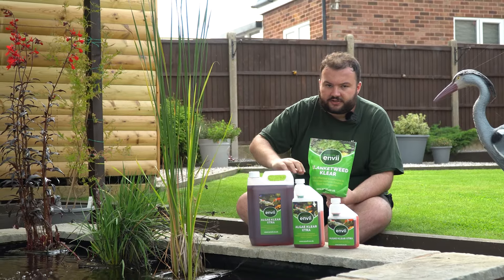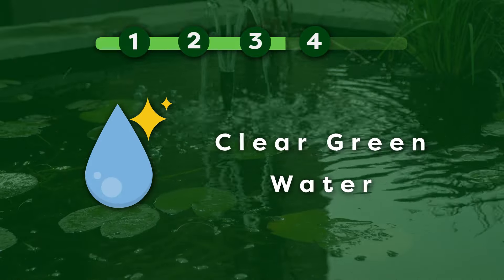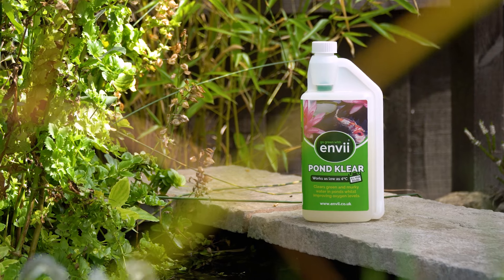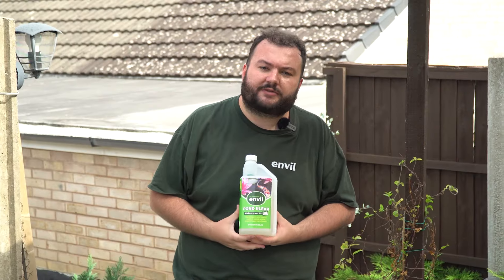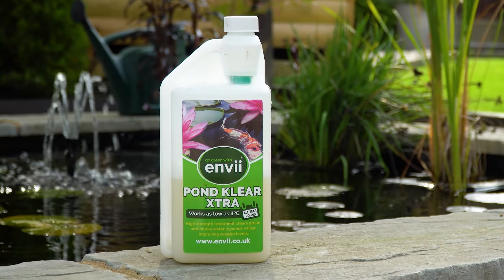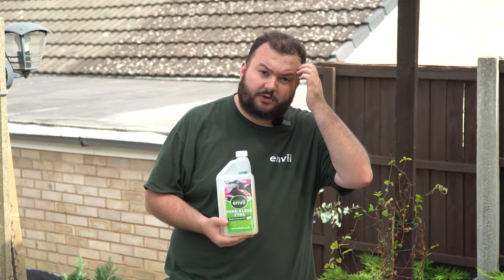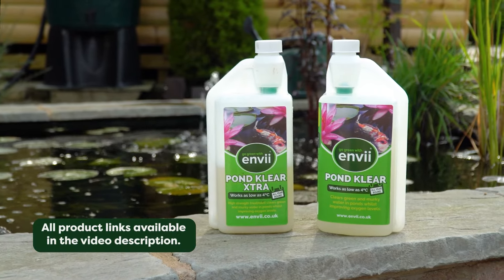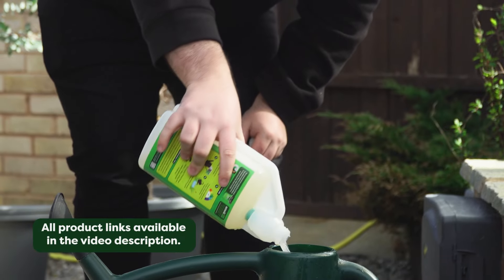The next step is green water, which is probably the most common problem a pond owner will face. We've designed a product called Pond Clear, specifically to target and clear green and murky water. This 1-litre bottle treats 20,000 litres, giving around five to six treatments for a smaller pond. We also have a stronger product called Pond Clear Extra, which contains three times as much bacteria, making it a stronger treatment — better for larger ponds and it'll last you a lot longer.